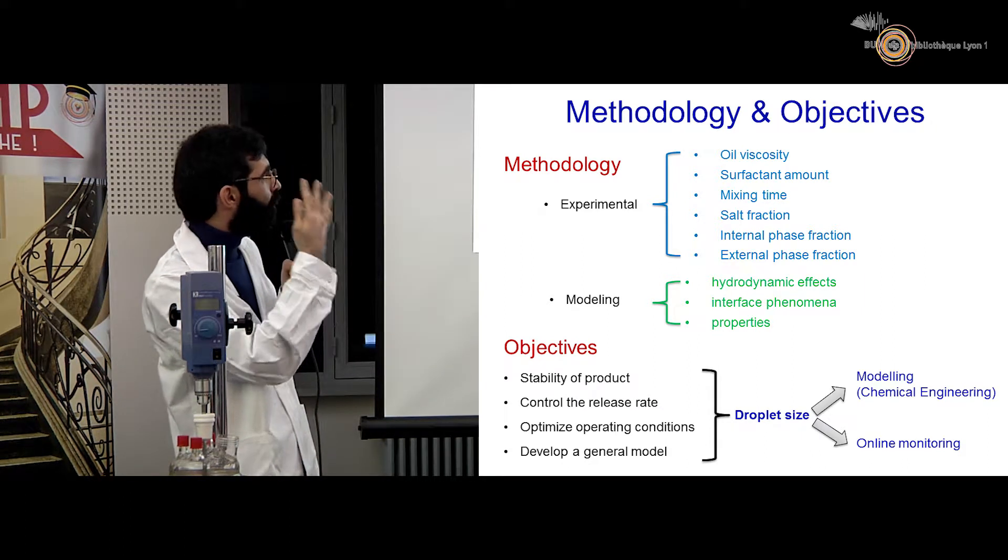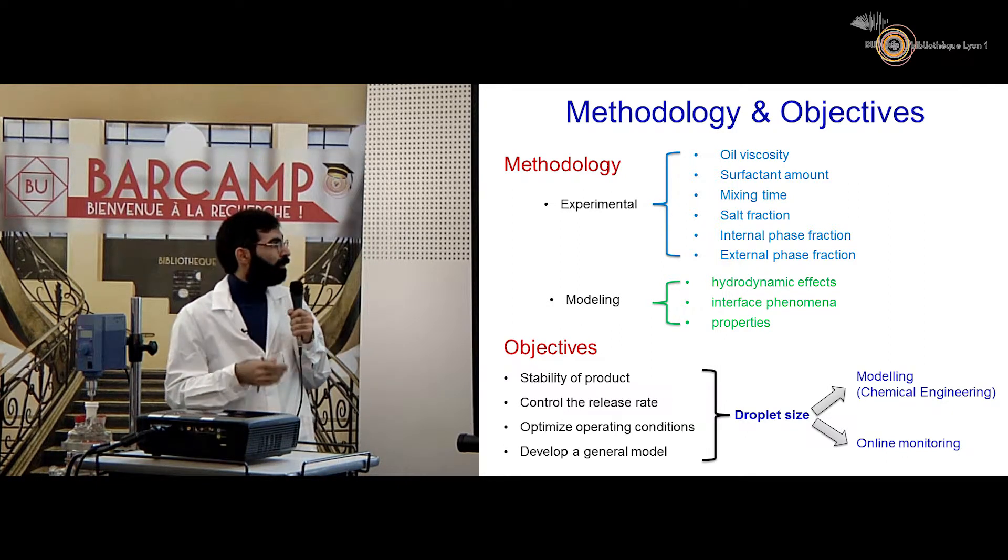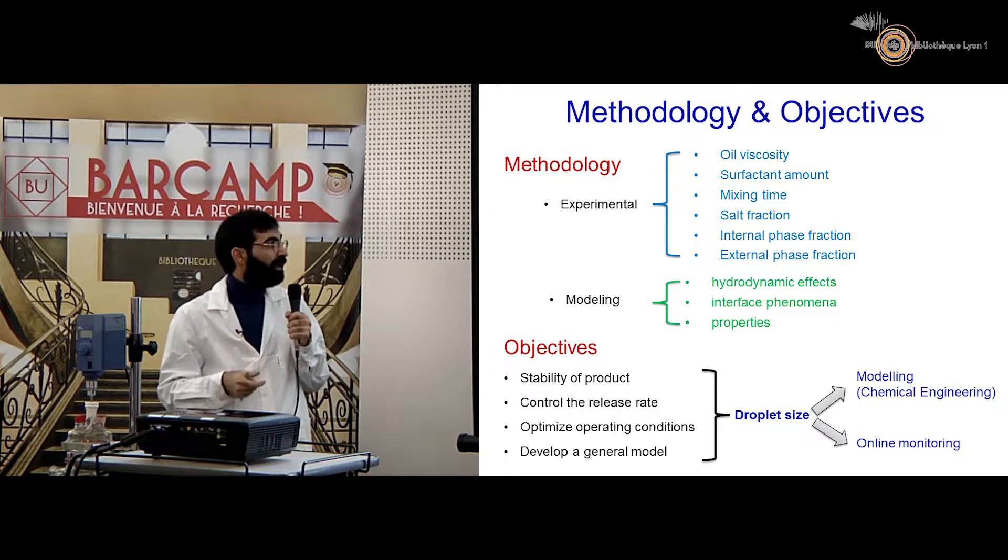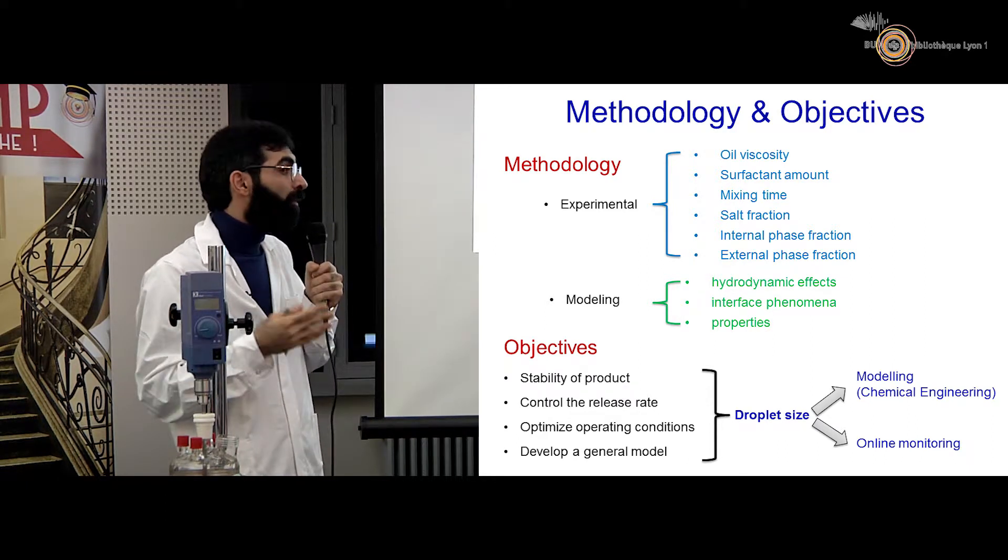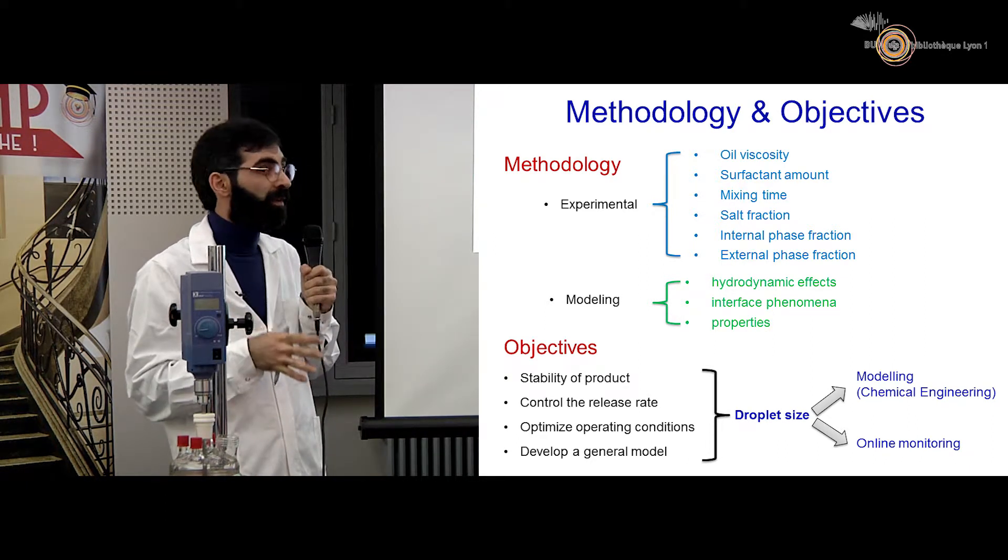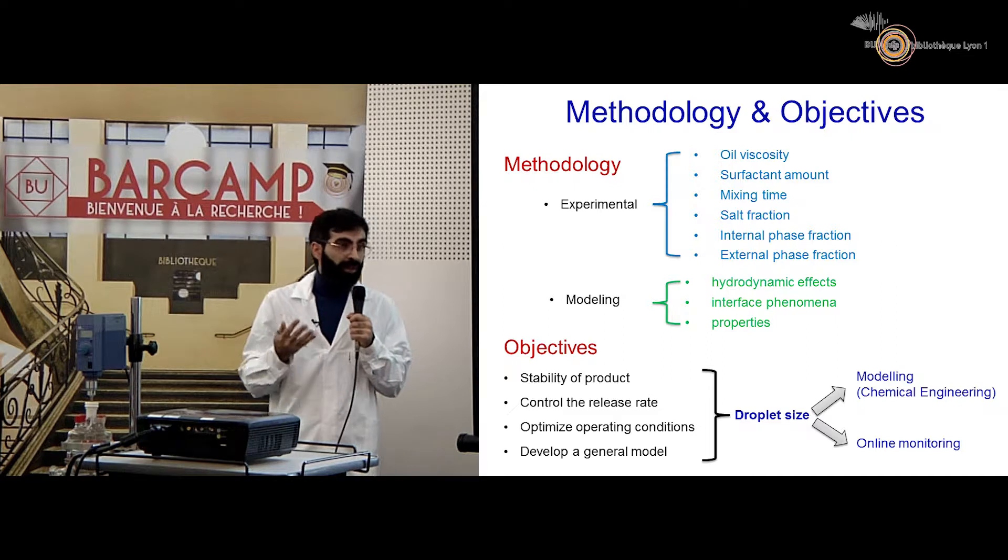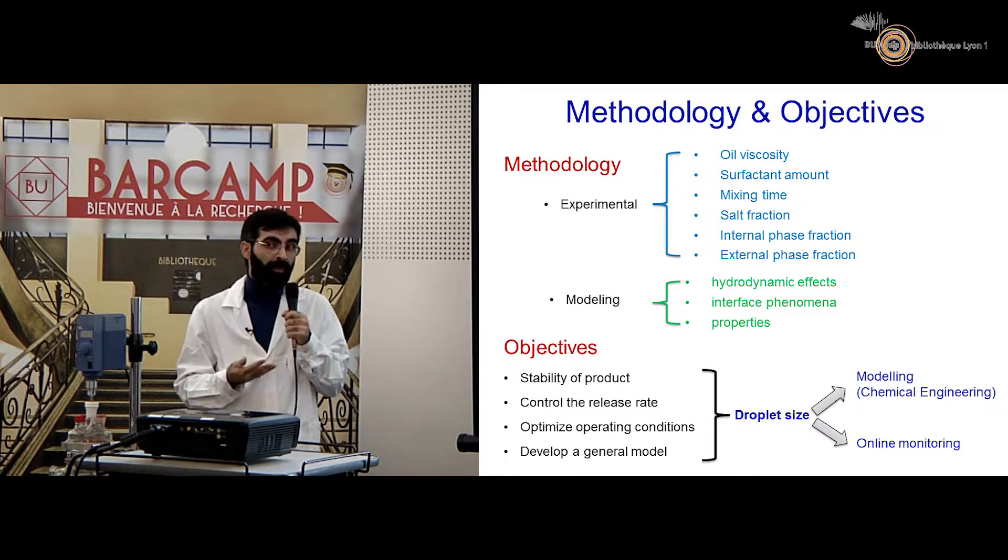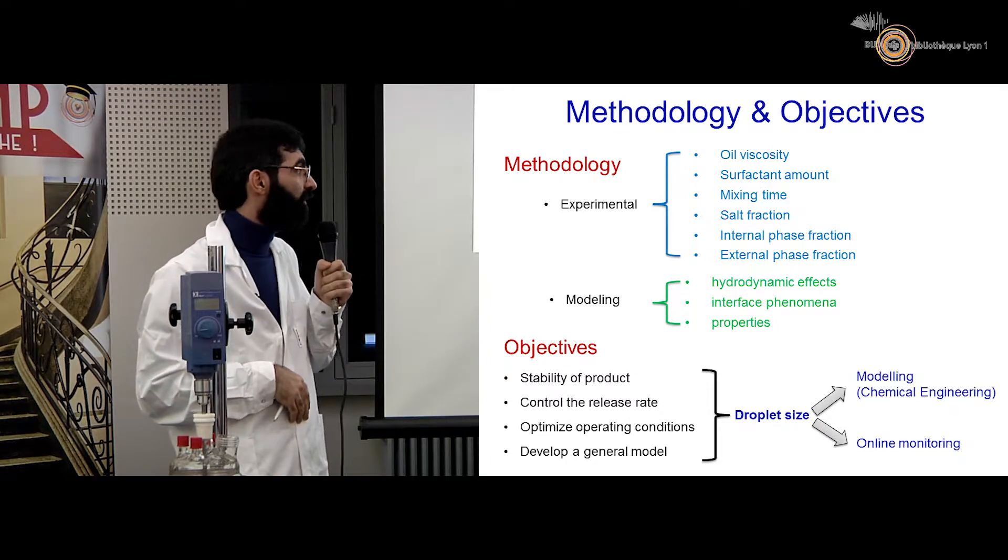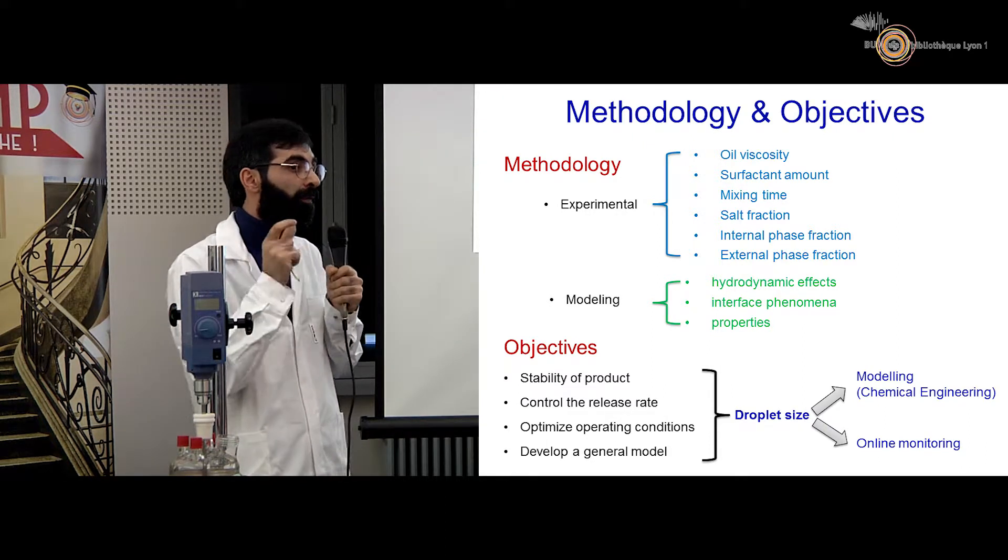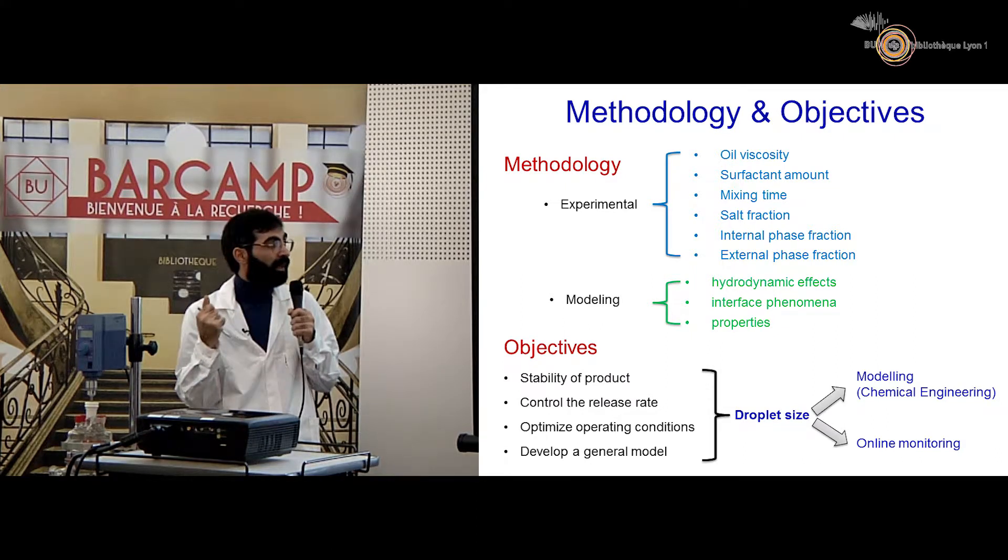So what is the objective of doing this in general? I want to be sure about the stability of my product or I want to control the release rate of my product, and during the modeling and experiments I want to optimize my operation and operation conditions. Finally I want to develop a general model for the process of double emulsion which will make it easier to predict and follow the stability of the products. For doing so I need one critical parameter which is droplet size, both for the internal ones and external ones.